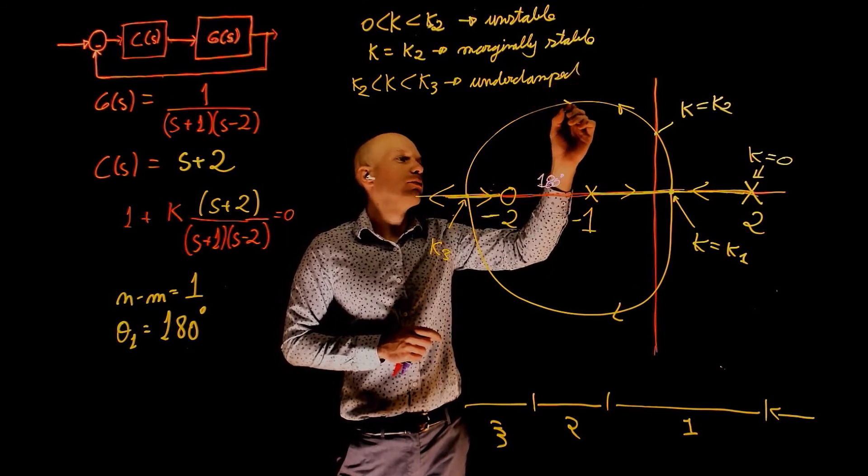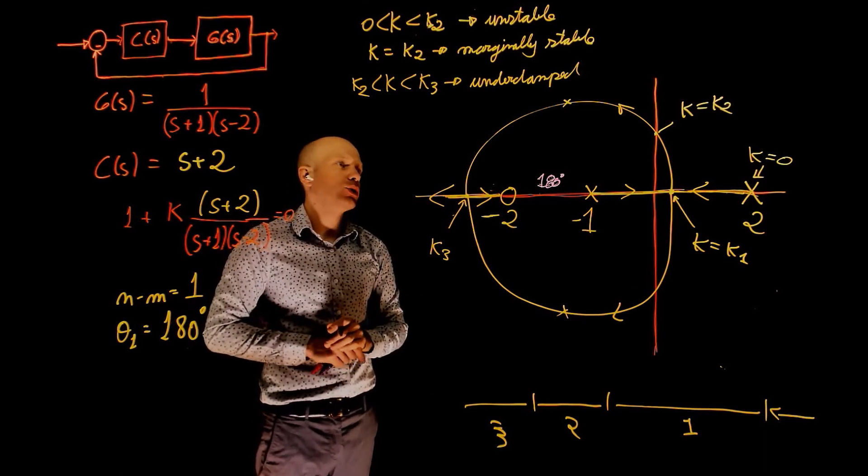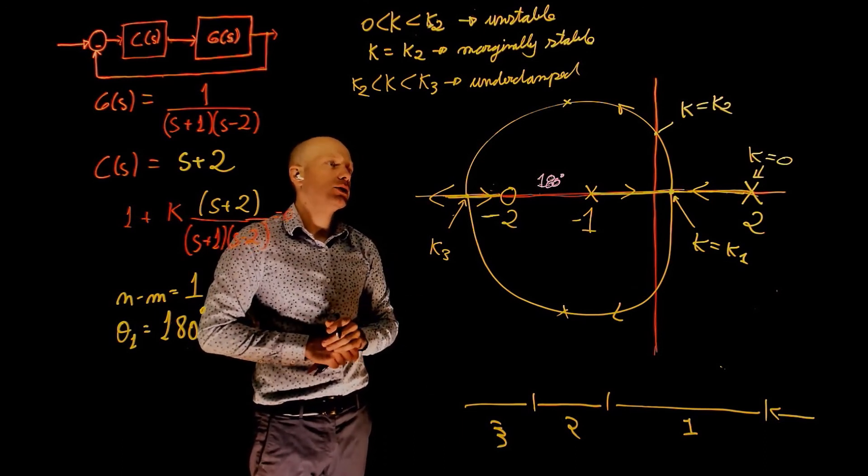Because if you place a pole anywhere here along this root locus, the pole will have complex conjugate numbers that characterizes an underdamped system.